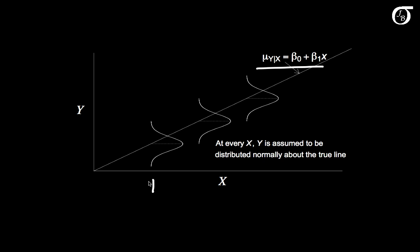So down here at this value of x, the y values are normally distributed about that line. And at this value of x, the y values are normally distributed about that line. And at this value of x, the y's are normally distributed about that line. And the variance is the same at all of those different values of x as well.